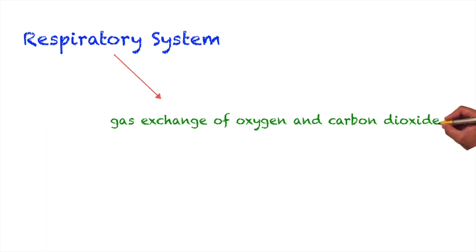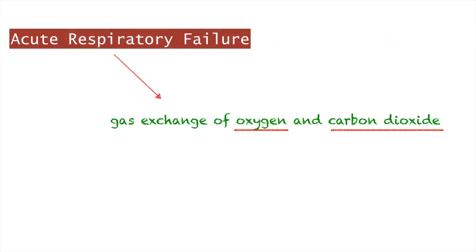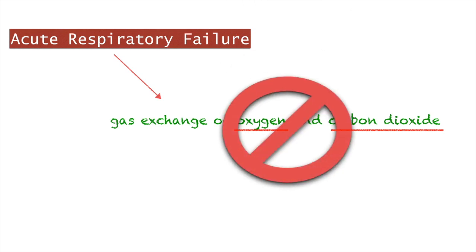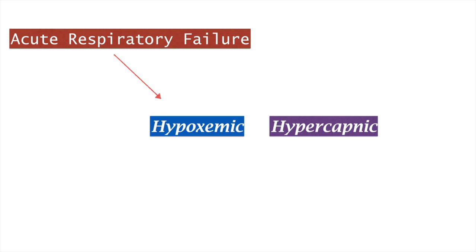The respiratory system has one major task, and that is to facilitate gas exchange — specifically oxygen and carbon dioxide. However, in acute respiratory failure, this function is limited or completely non-functional. There are two types of acute respiratory failure: hypoxemic respiratory failure and hypercapnic respiratory failure.